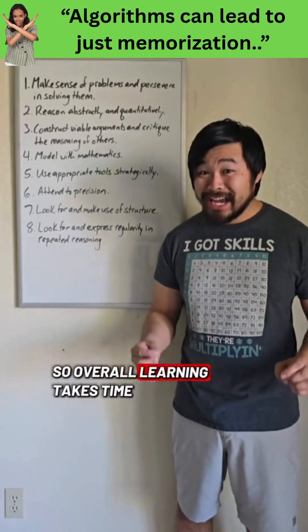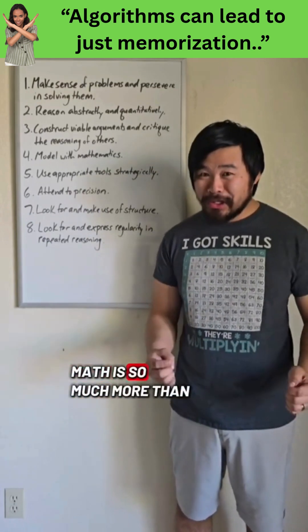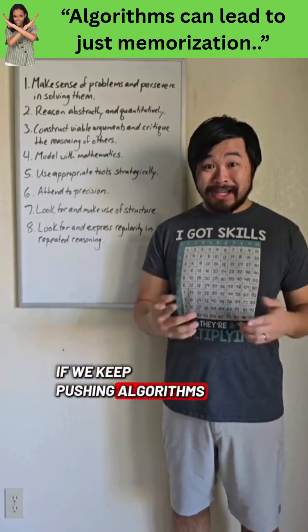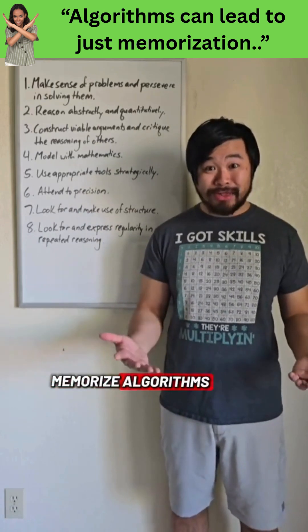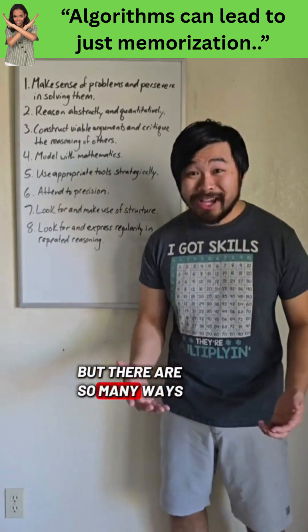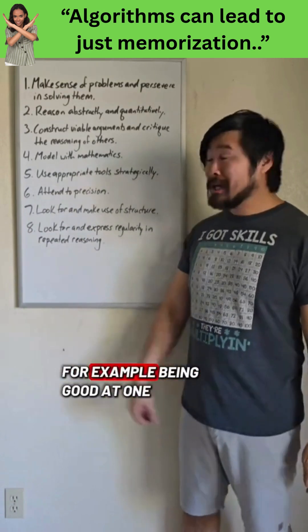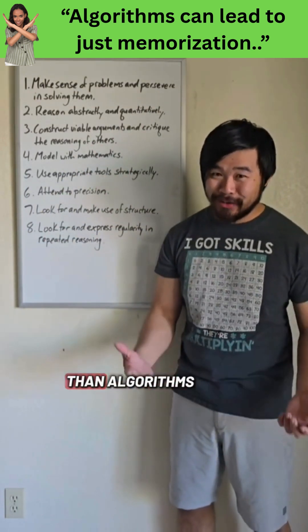So overall, learning takes time. It's not a race. And also math is so much more than algorithms. If we keep pushing algorithms, students might think that to be good at math, all they need to do is memorize algorithms. Kind of like what I was thinking when I was in college. But there are so many ways of being good at math. For example, being good at one of these eight mathematical practices. So math is so much more than algorithms.